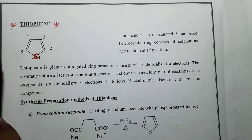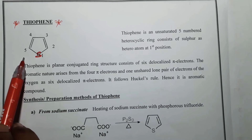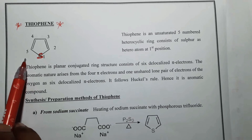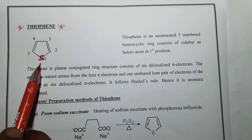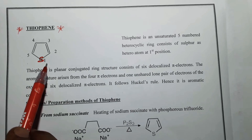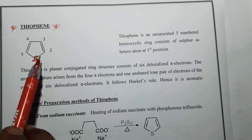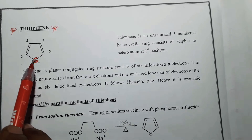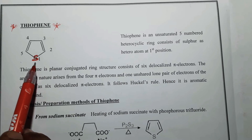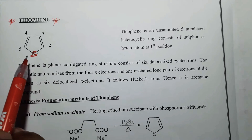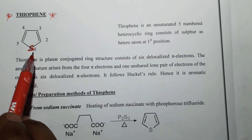Coming to the structure of thiophene, it is the 5-membered heterocyclic ring system consisting of sulfur as the heteroatom. According to the nomenclature system, the numbering system is started from the heteroatom, so that sulfur gets the first position.